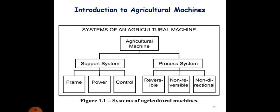This is the figure which is system of agricultural machineries. You can observe over here, the agriculture machines need support system which includes the frame, power, and control, and process system which is reversible, irreversible, and non-directional. So you can observe that the systems of agricultural machine is quite complicated.